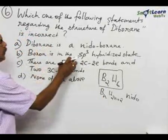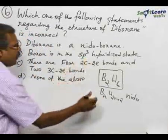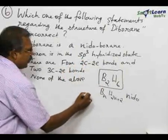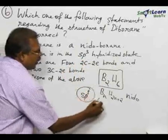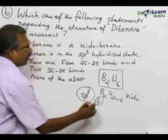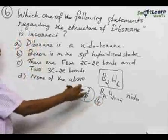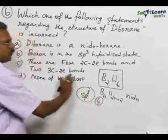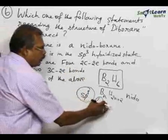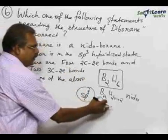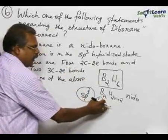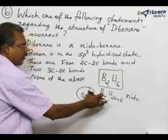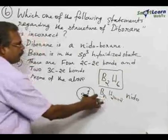Boron is in the sp3 hybrid state only. There are four hybrid orbitals. Out of the four hybrid orbitals, three are used for bond formation, and the fourth one is an empty hybrid orbital that is used for a special bond called banana bond formation.